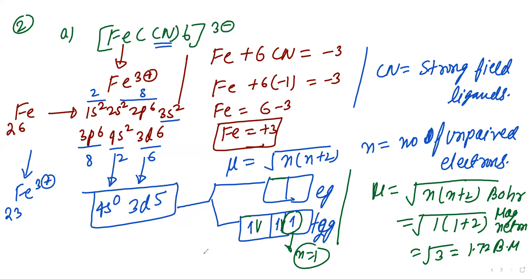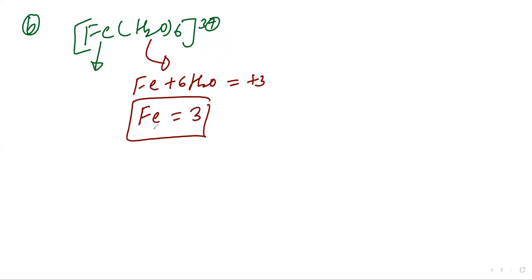Next example is Fe(H2O)6 raise to 3 plus. Here oxidation state for iron is also plus 3. Because H2O holds zero oxidation state. So it will be Fe 6 of H2O equals plus 3. Last electronic configuration is 3d5 after losing 3 electrons. This is the Fe 3 plus electronic configuration.